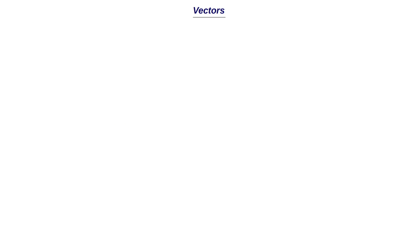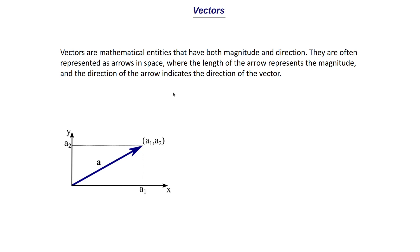First let's understand what is meant by a vector, and later we can discuss how this is used in deep learning. Vectors are mathematical entities that have both magnitude and direction. This is what we think about when we talk about vectors — what we would have learned in school as well. There is another basic data type called scalar which has only a magnitude — you can think of scalars as single numbers or constant values. Vectors are often represented as arrows in space, where the length of the arrow represents the magnitude and the direction of the arrow indicates the direction of the vector.